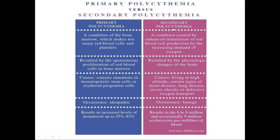In secondary polycythemia, WBCs and platelets will be normal because it is caused by enhanced stimulation of red blood cell production due to the increasing demand for oxygen, which is caused by hypoxia. Primary polycythemia results from spontaneous proliferation of red blood cells in the bone marrow, while secondary polycythemia results from physiological changes due to decreased oxygenation of tissues.